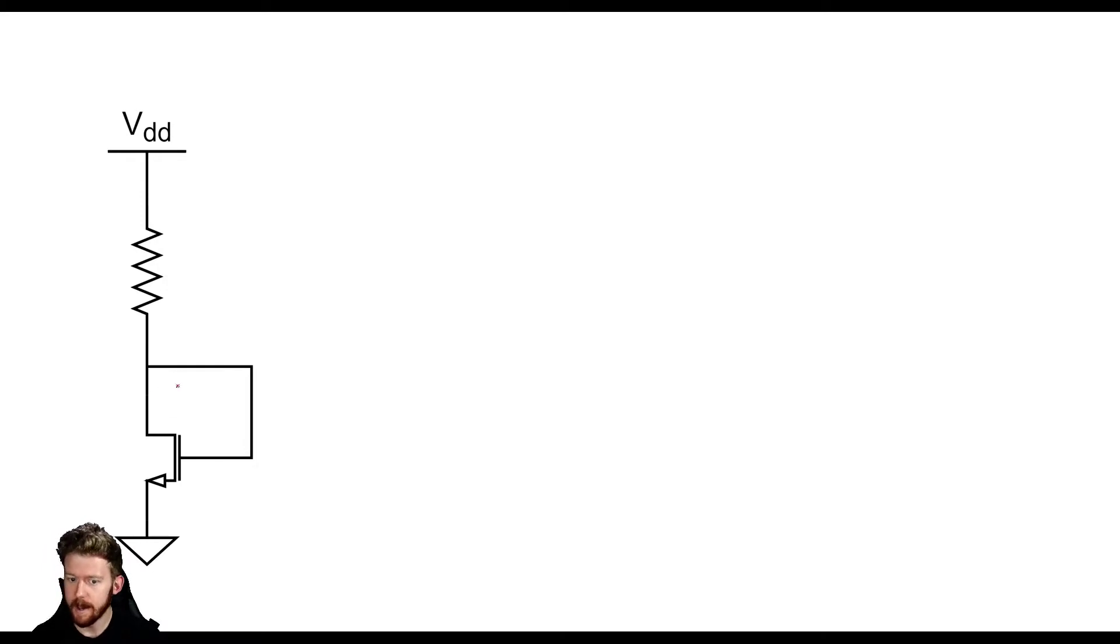So what ends up happening is that this MOSFET finds a stable solution where VG here is just going to be some value probably near the threshold like three volts that allows a constant current to flow.